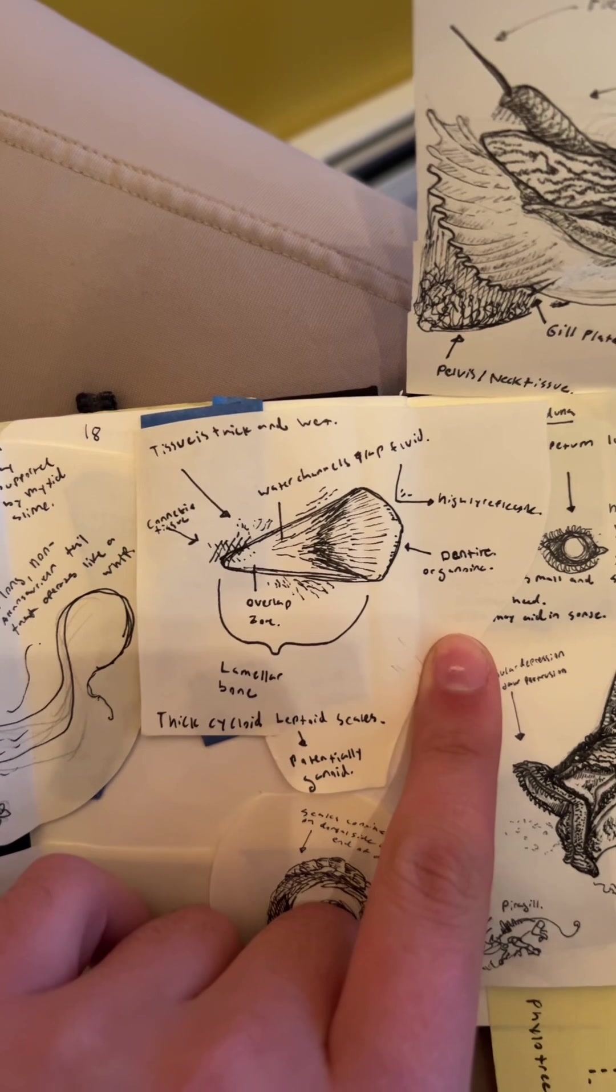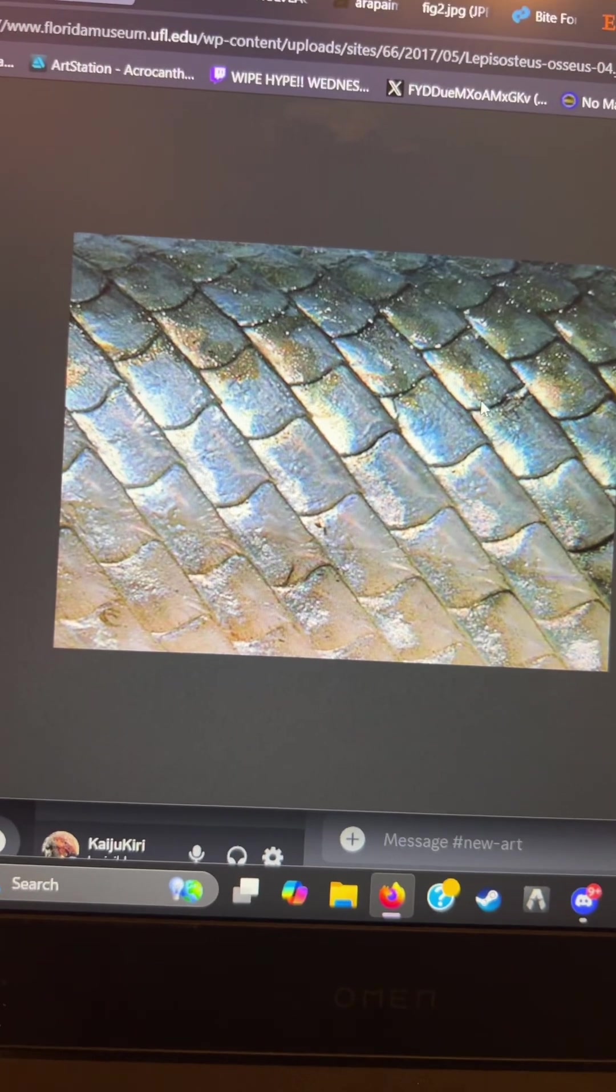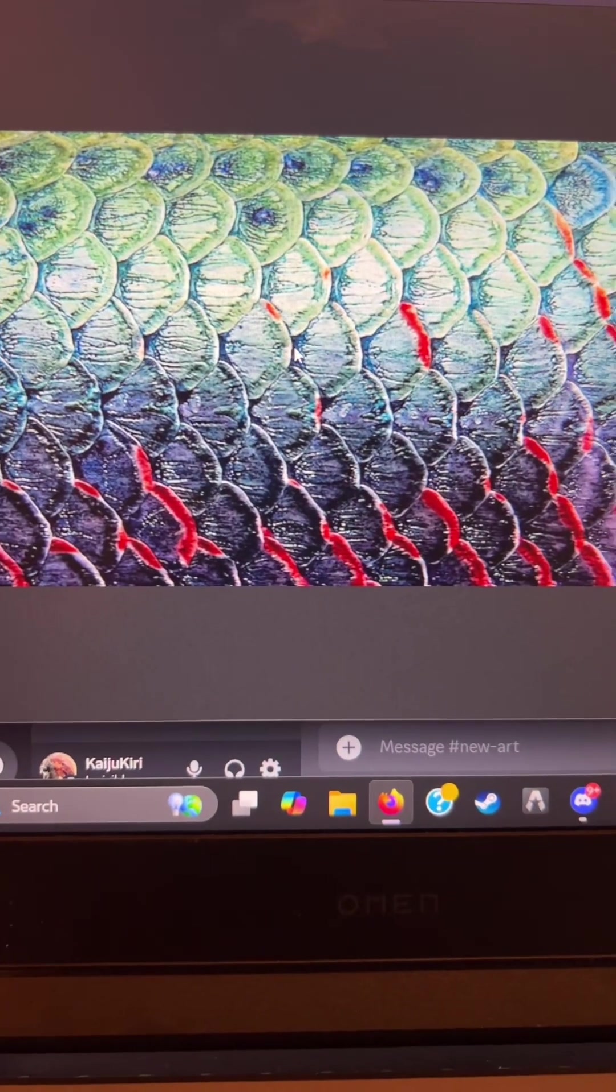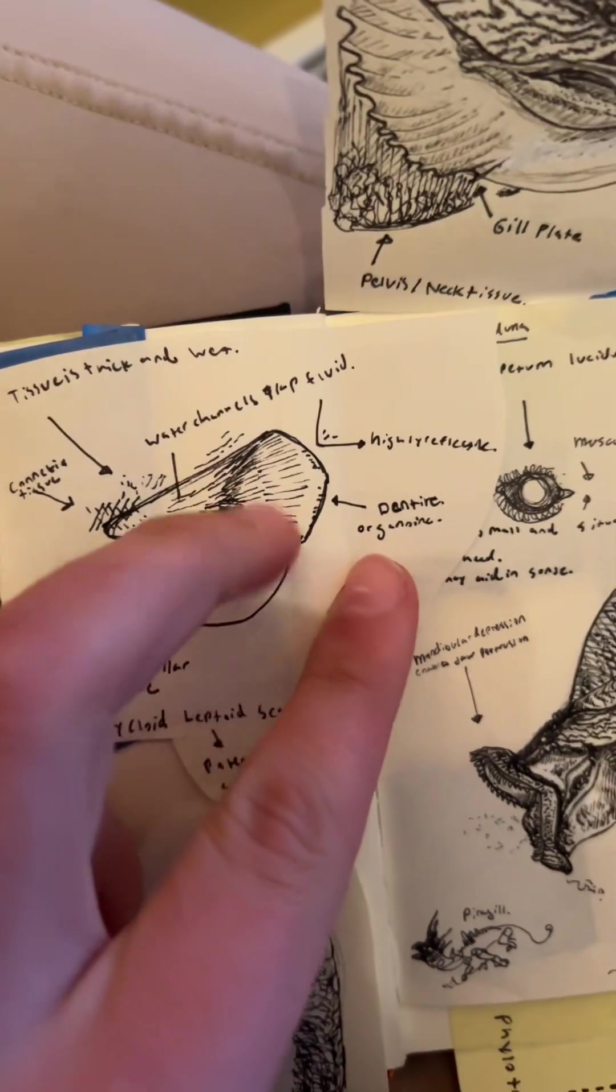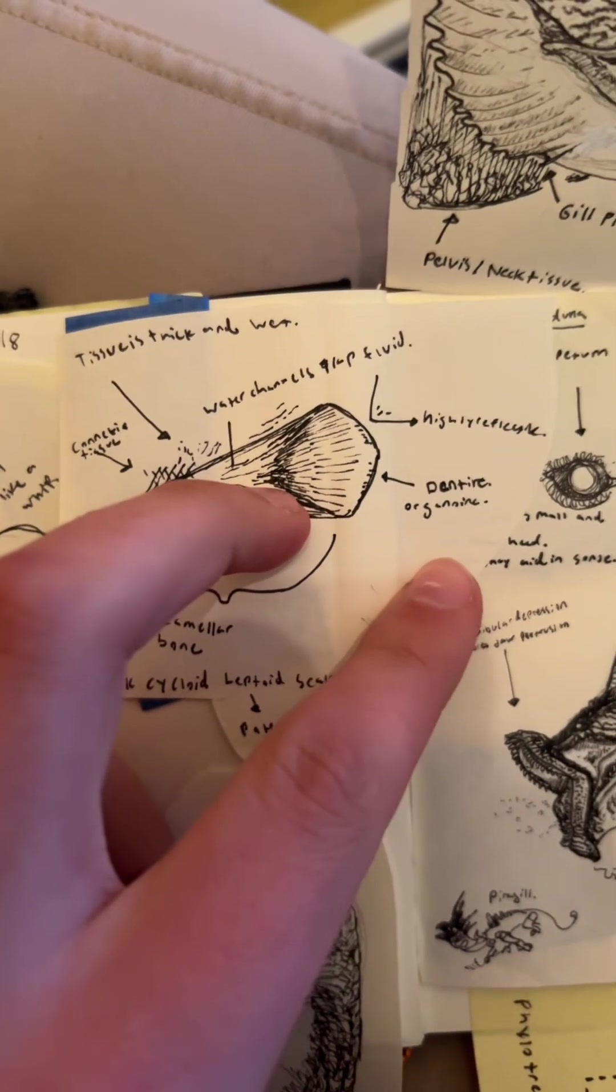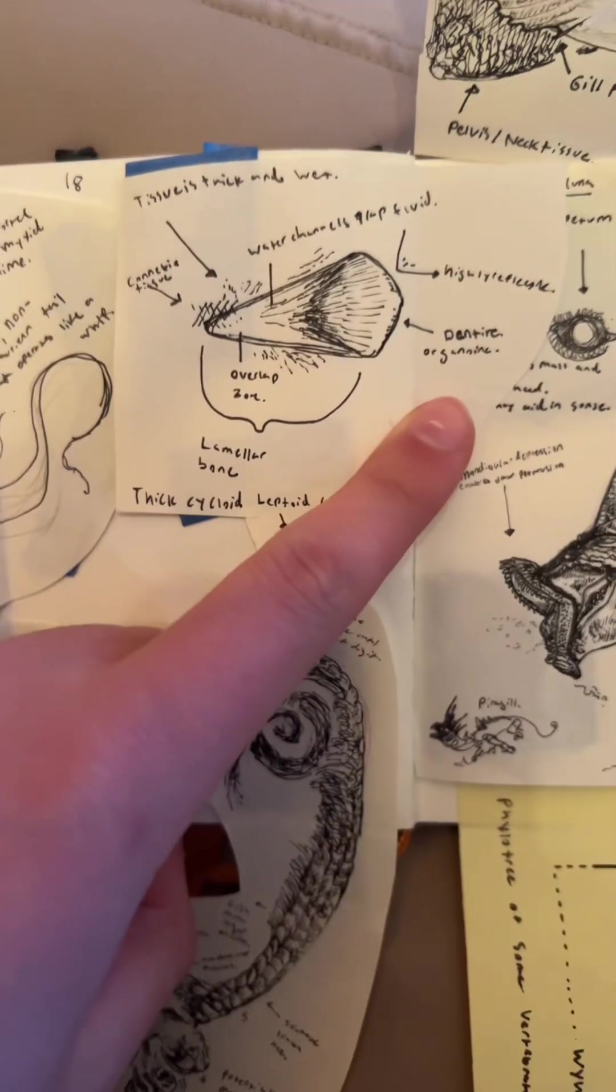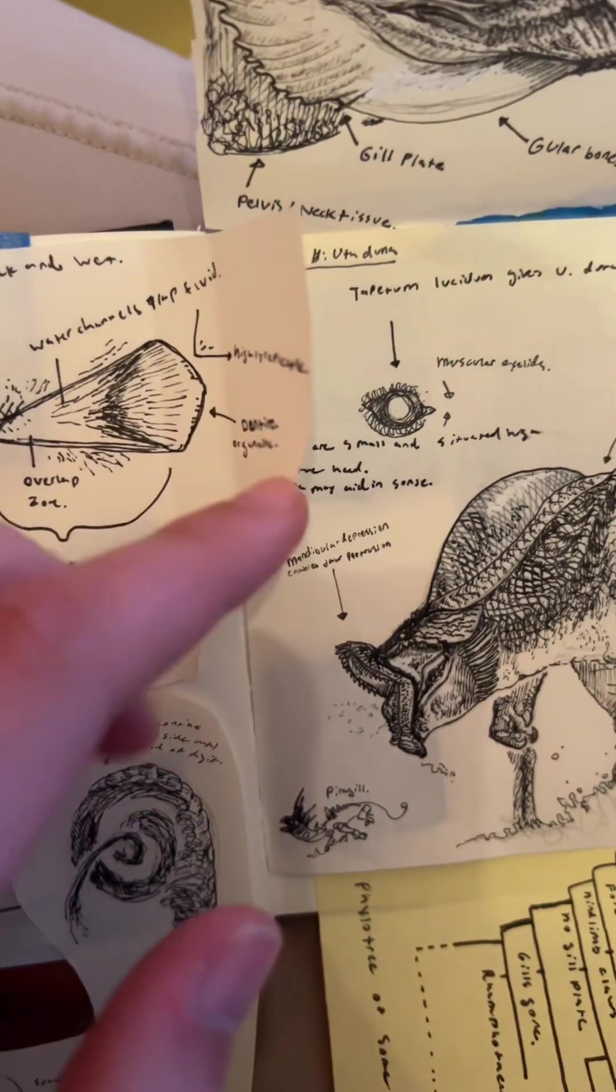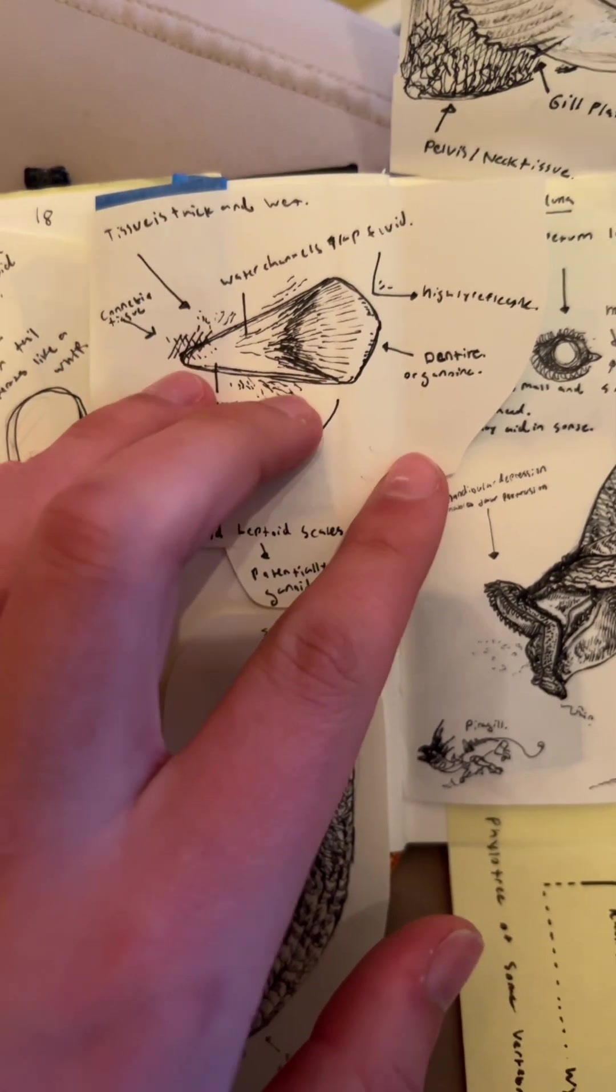However, I really can't settle on whether these scales are leptoid or ganoid scales. Now, this is less related to shape than it is to the actual chemistry of the scale covers. Here's an example of leptoid scales in alligator gar, and here's an example of ganoid scales in arapaima gigas, the pirarucu. And really what trips me up is I can't tell if this reflective sheen that sits on top of the scale is made of dentine or ganoid. In-game these scales are described as being incredibly tough, but they're also described as being shiny and beautiful.